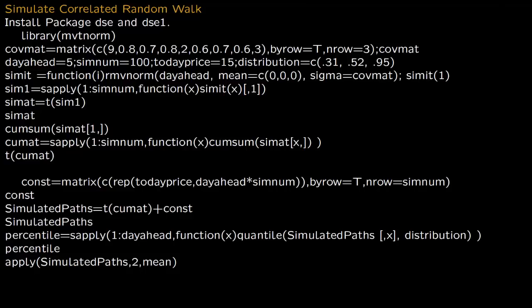Let us now simulate correlated random walk, and in R this is really easy to do. You first need to install two packages: dsc and dsc1. The library mvt-norm is in these two packages. dsc1 is just a modification of dsc and doesn't have much in it, but we have to use this library which is multivariate normal.